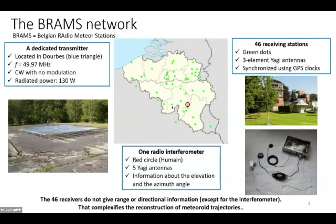What I want to emphasize is that in our case, in our interest of recomputing and retrieving meteorite trajectories, the receivers that we have with the BRAMS network do not provide any range or directional information. The only station that does is the interferometer that you see here with the little red circle. The fact that we have no range or direction information complicates the retrieval of trajectories.